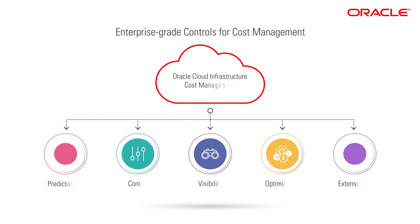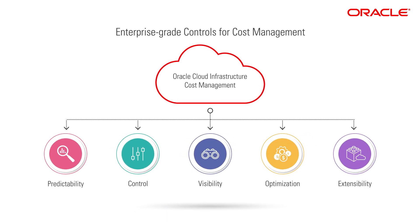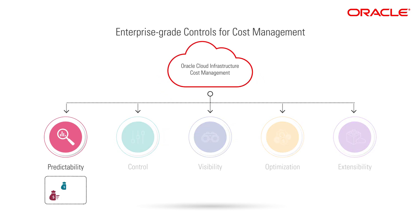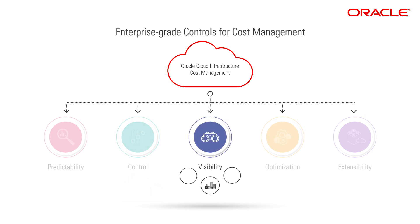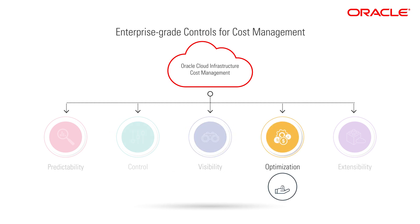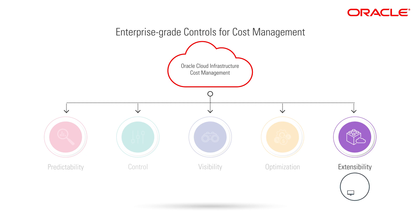In summary, Oracle Cloud Infrastructure Cost Management Solutions delivers enterprise-grade controls, giving you the ability to achieve predictable cloud spend and prevent overages, the control you need to enforce quotas on your high-value cloud resources, visibility to see which cloud services are driving usage and by which departments and projects, and the ability to perform cost optimization and lower spend, as well as extensibility to leverage the cloud management and BI tools you know and already use.